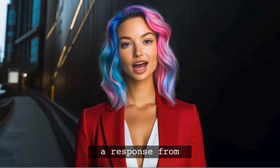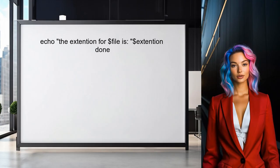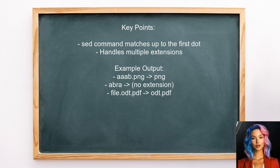Another approach to getting file extensions in Bash involves using a simple script that lists all files in the current directory and uses the sed command to extract the extension from each file name. The sed command matches characters up to the first dot and removes them, allowing you to capture extensions even if there are multiple dots in the file name.